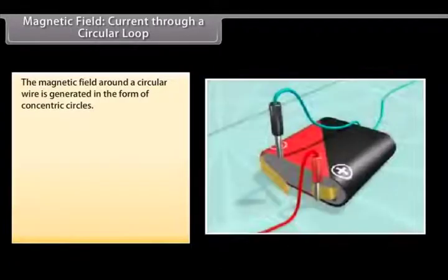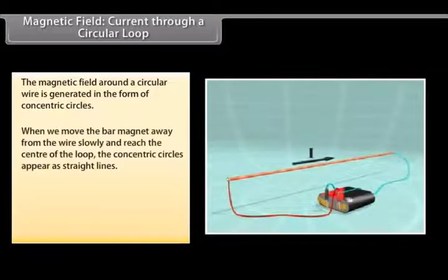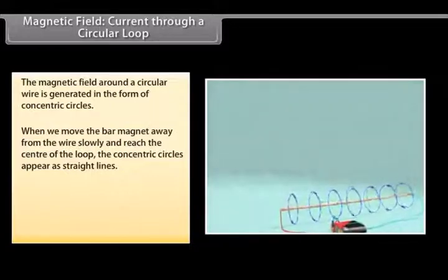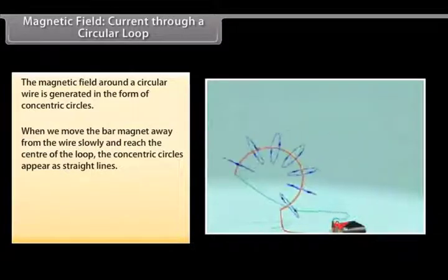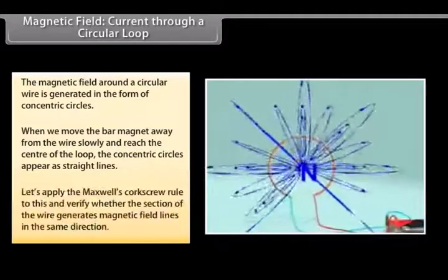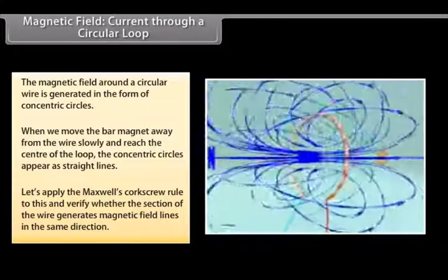Magnetic field: Current through a circular loop. Let us now look at what happens when the wire through which we passed the current is placed in a circular manner. The magnetic field around it is generated in the form of concentric circles. Try moving the bar magnet away from the wire slowly. By the time we reach the center of the loop, the concentric circles appear as straight lines. The entire magnetic field appears as a straight line. Now try applying Maxwell's Corkscrew Rule to this and check whether every section of the wire is able to generate magnetic field lines in the same direction.